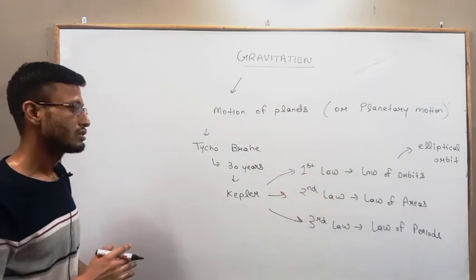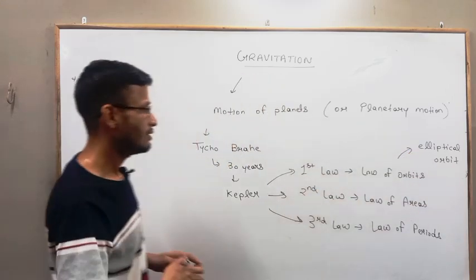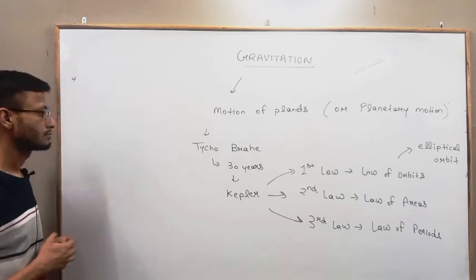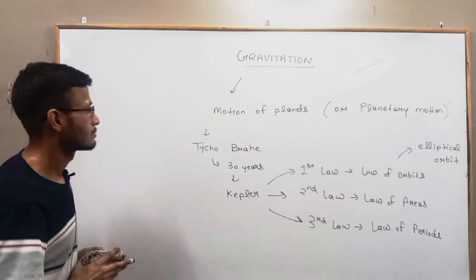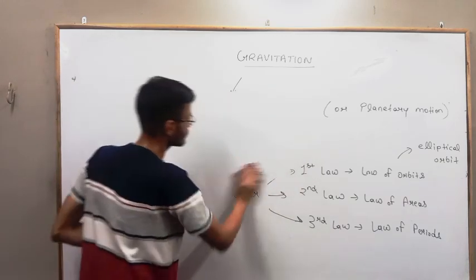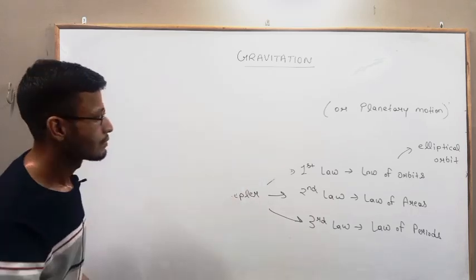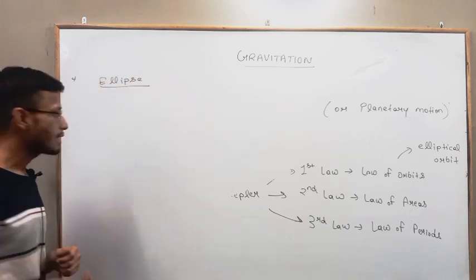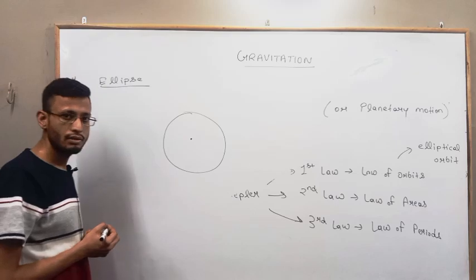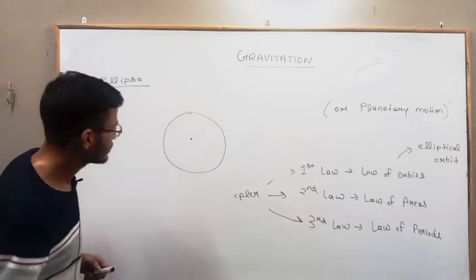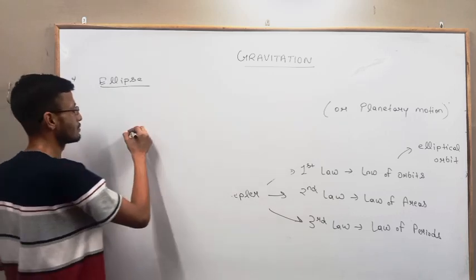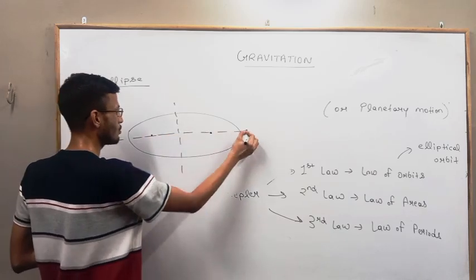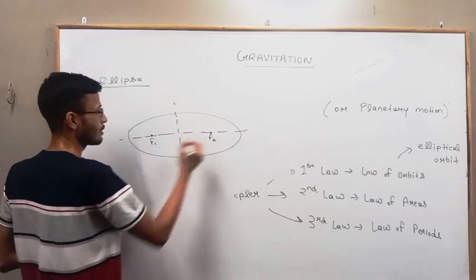Now let's first discuss about ellipse, then we will go into these laws. Just like a circle has one center, similarly in an ellipse we have two points which are known as focus f1 and f2.